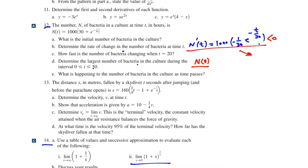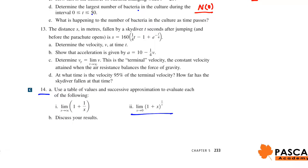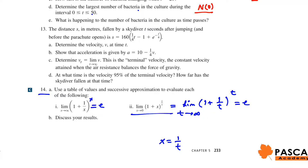Question 14, part b: find the limit of (1 plus x) to the power of 1 over x as x approaches 0. You can use a table of values, but we can also use the known limit that (1 plus 1/x) to the power of x as x approaches infinity equals e. If we let x equal 1 over t, the given limit can be written as the limit of (1 plus 1/t) to the power of t as t approaches infinity, which equals e.